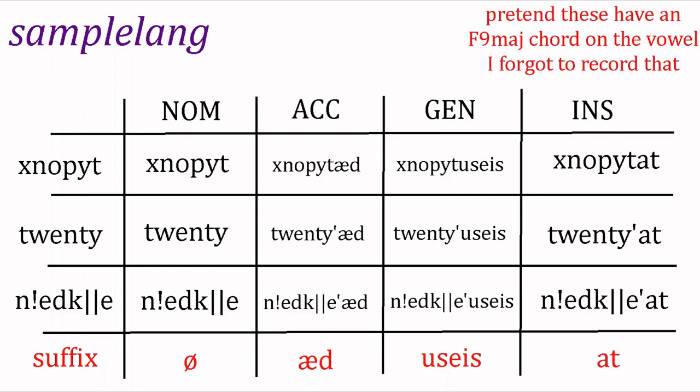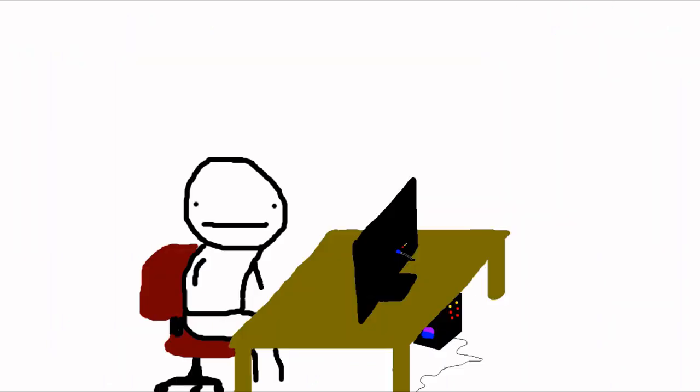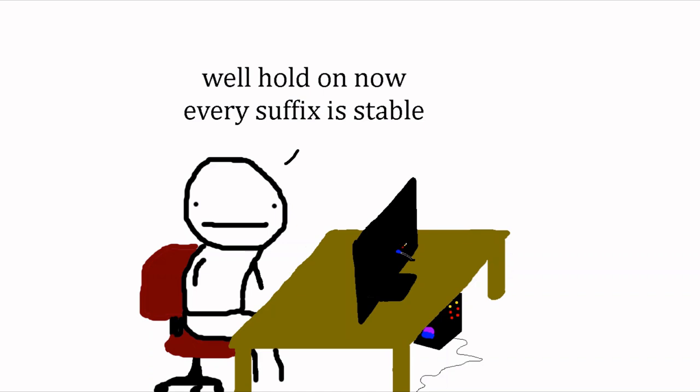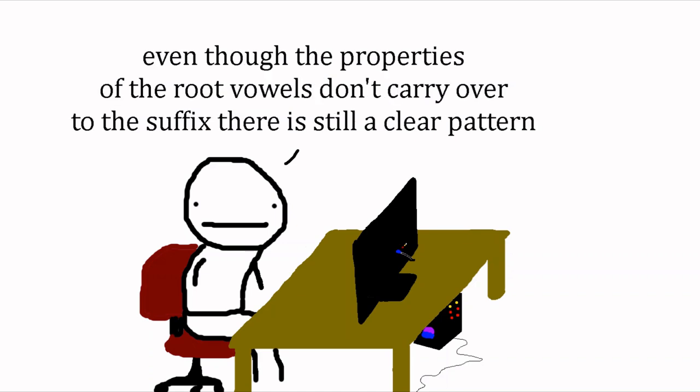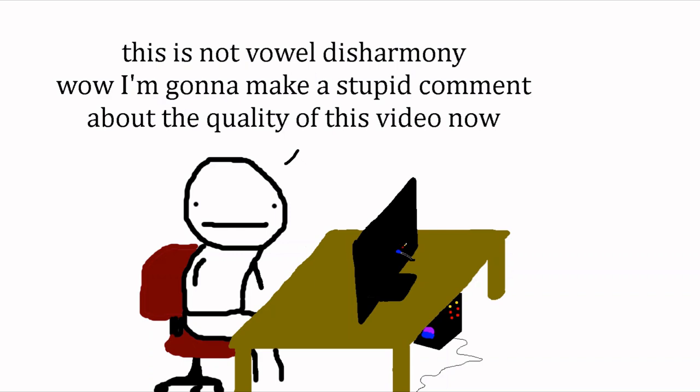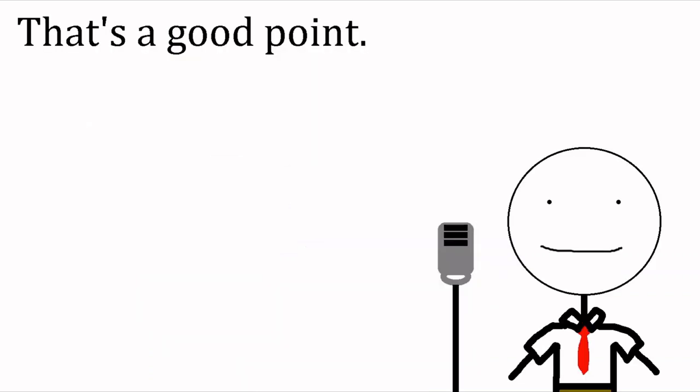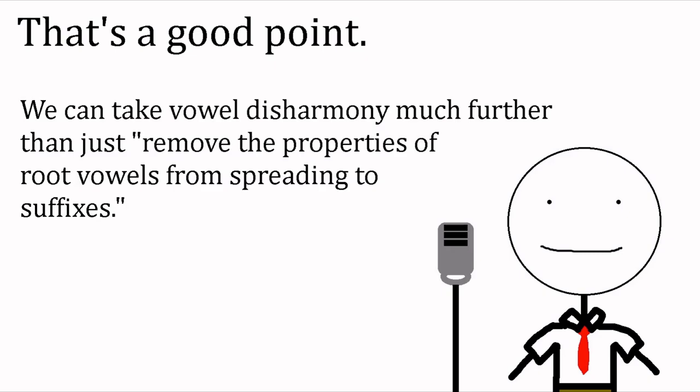Now we can see that if we inflect our words, the vowels do not follow some pattern across the word. Some of you may be thinking: if every ending is always stable and never changes, regardless of the fact that it doesn't have a pattern with the root morpheme, it's still clearly a pattern since you always know what the ending is. And that's a decent point.